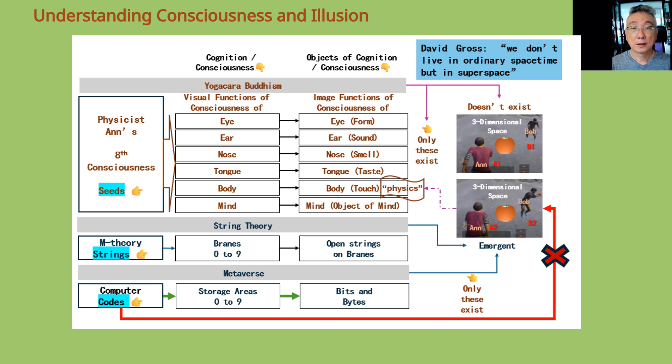Basically, for physicist Anne, whatever she studies or sees in experimental data are objects of consciousness. Physics is also an object of mind and of consciousness. This is what string theory has shown us.